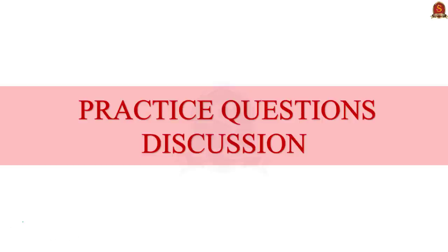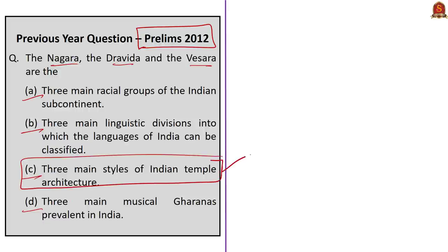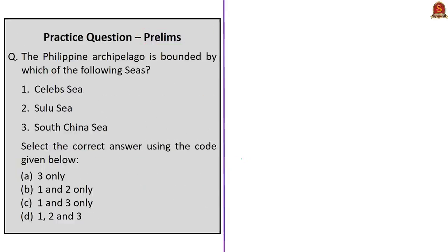Now we come to the practice questions discussion session. A previous UPSC Prelims 2012 question asks: Nagara, Dravida, and Vesara are — three main racial groups of the Indian subcontinent; three main linguistic divisions into which the languages of India can be classified; three main styles of Indian temple architecture; or three main musical Gharanas prevalent in India. As discussed in the last article, the correct answer is Option C — three main styles of Indian temple architecture.